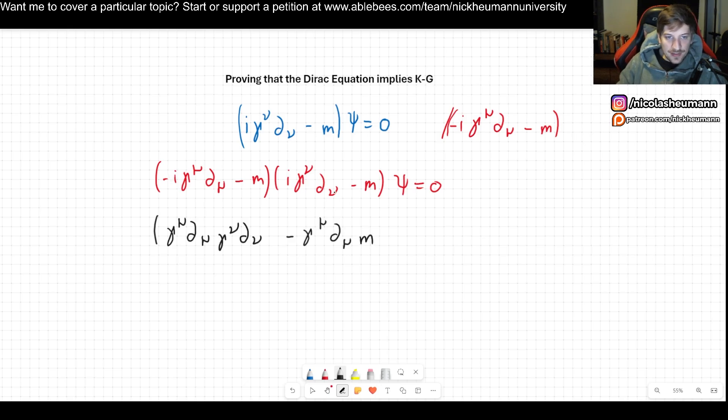So this is gamma mu del mu and then m. Now there is minus minus so we get plus and then I. Now we multiply the minus m so we get minus m I gamma nu del nu and then we get plus m squared and all of this is acting on psi.